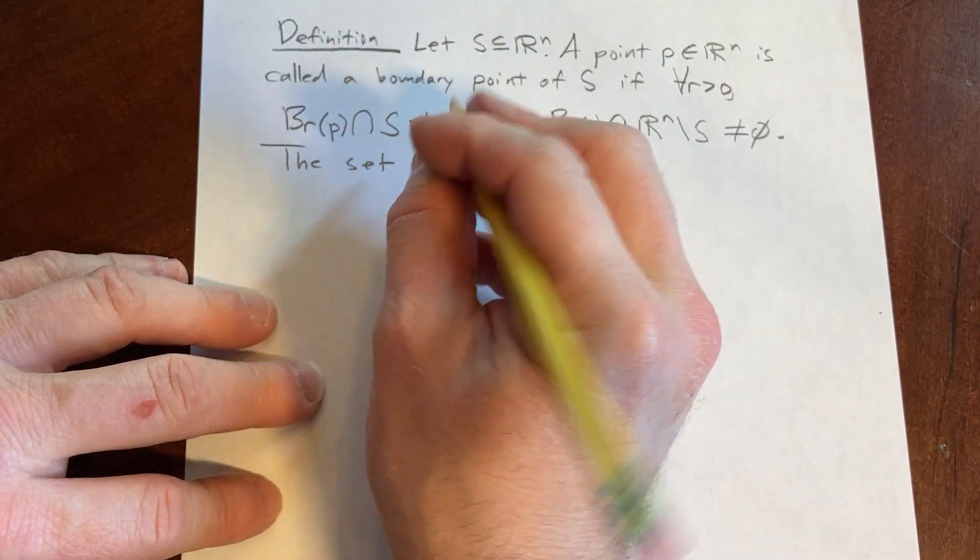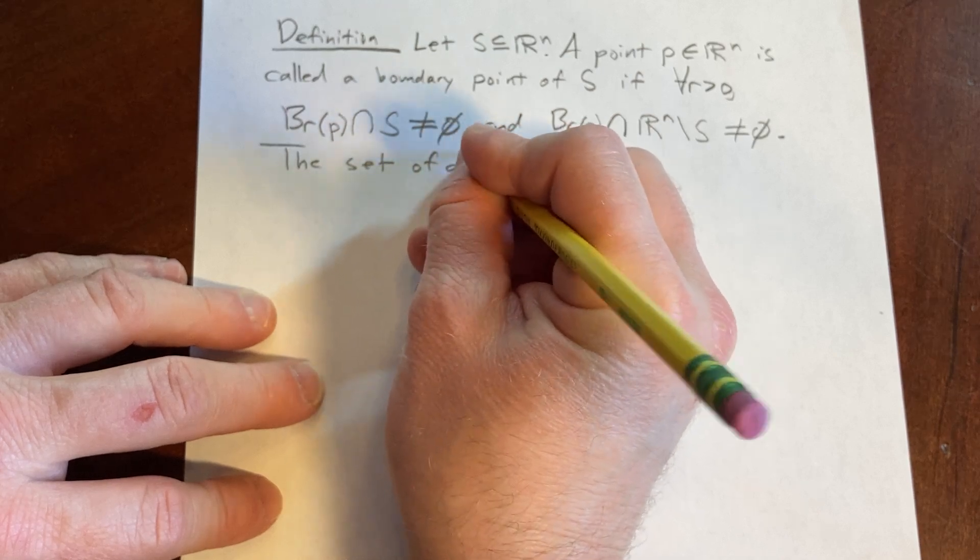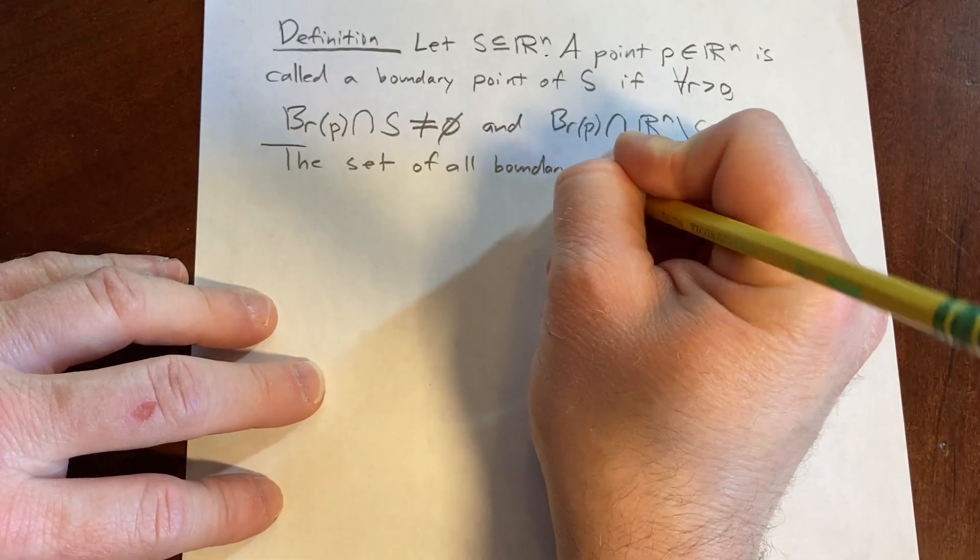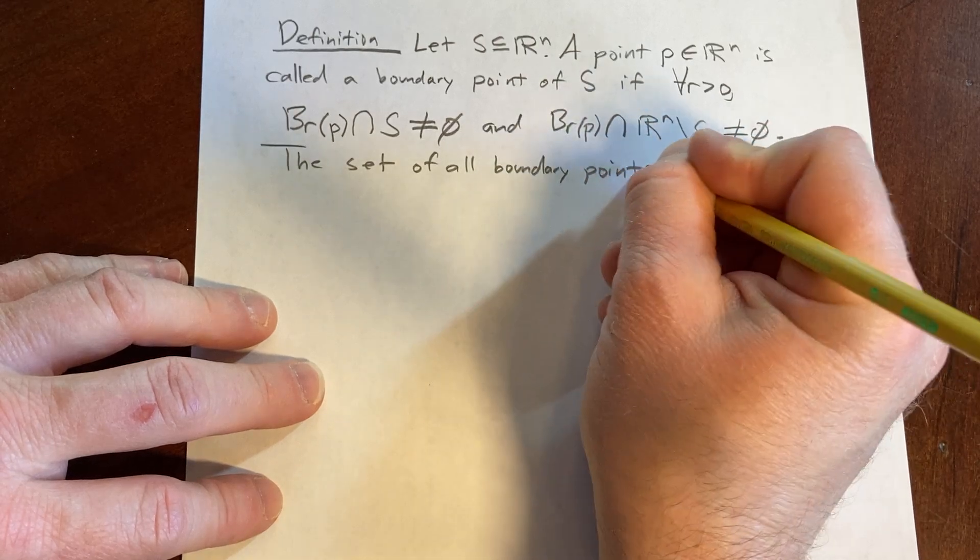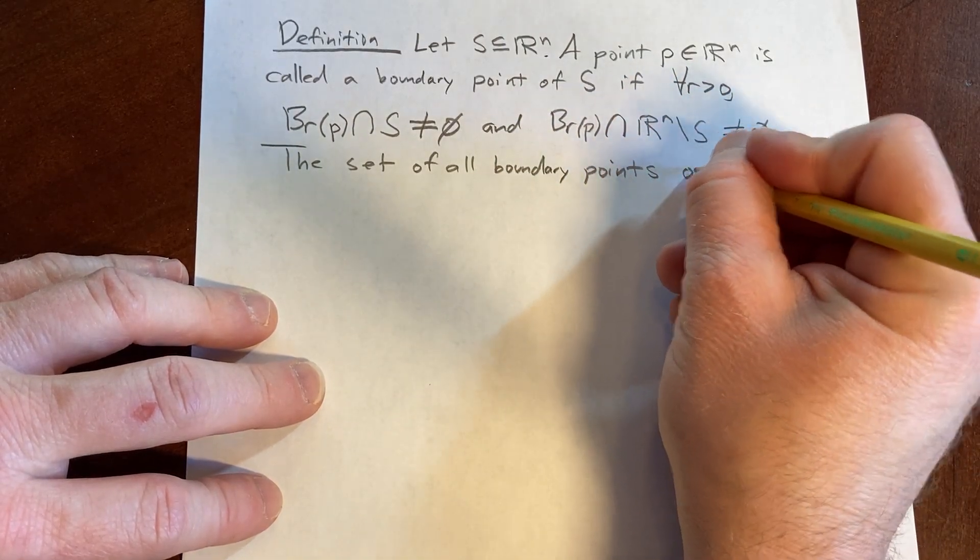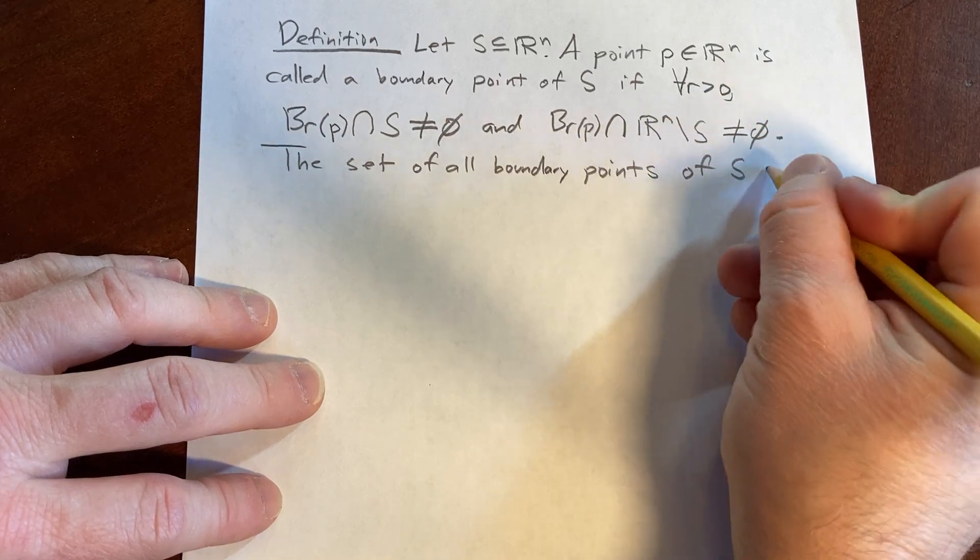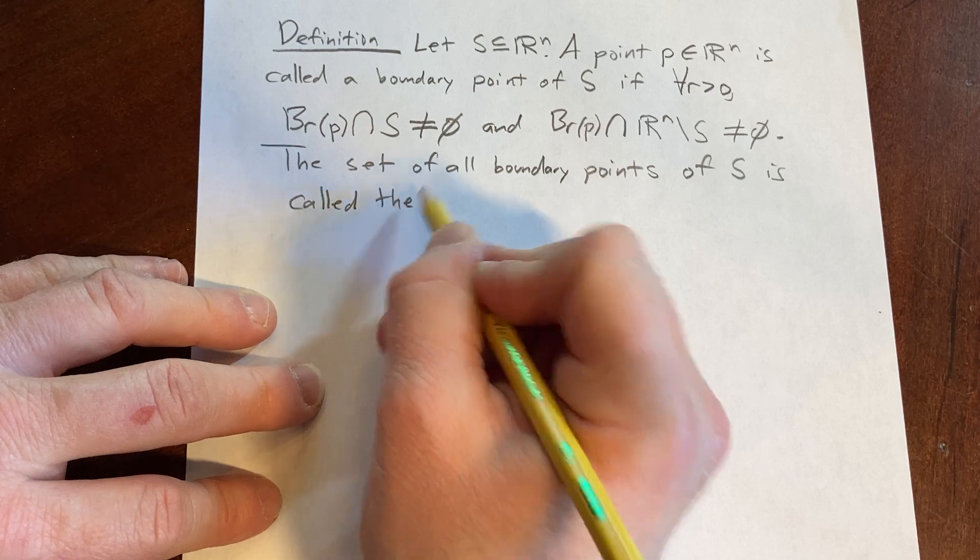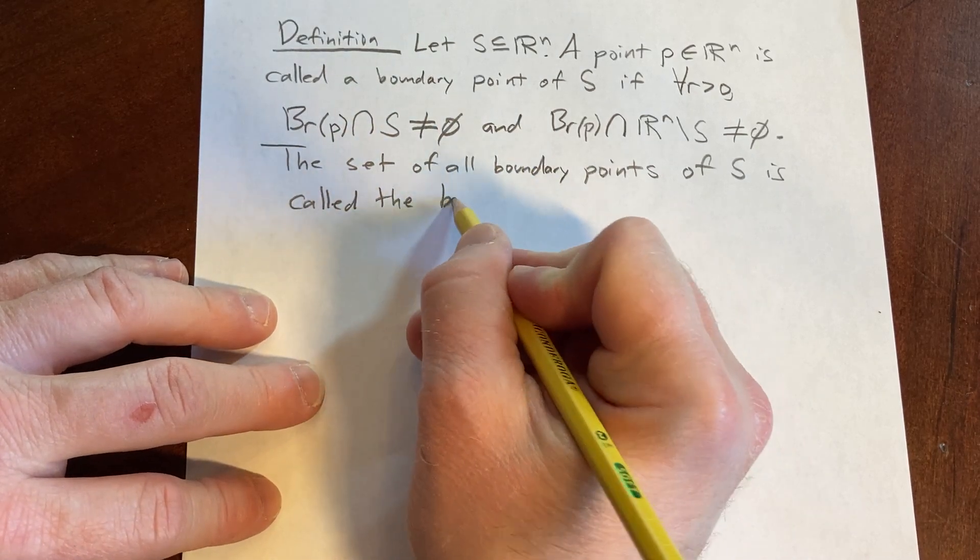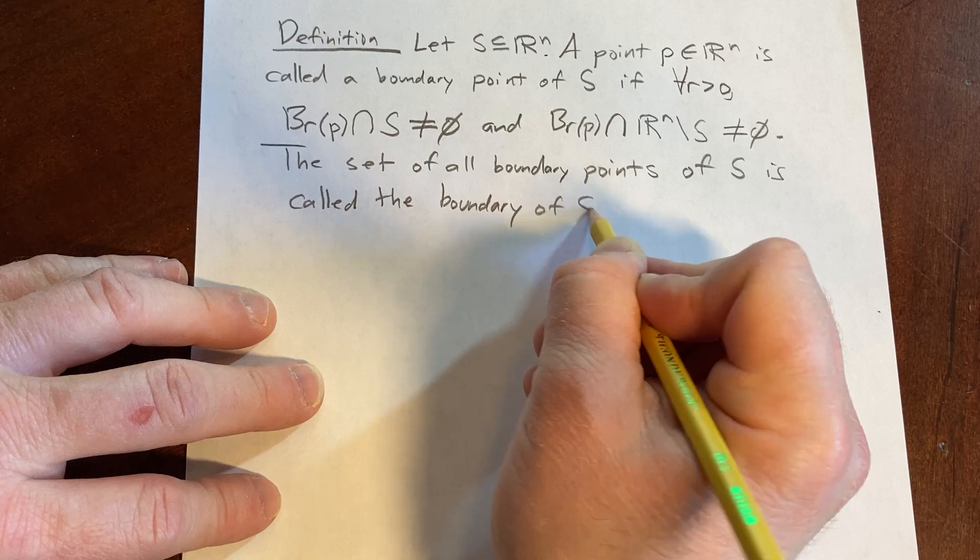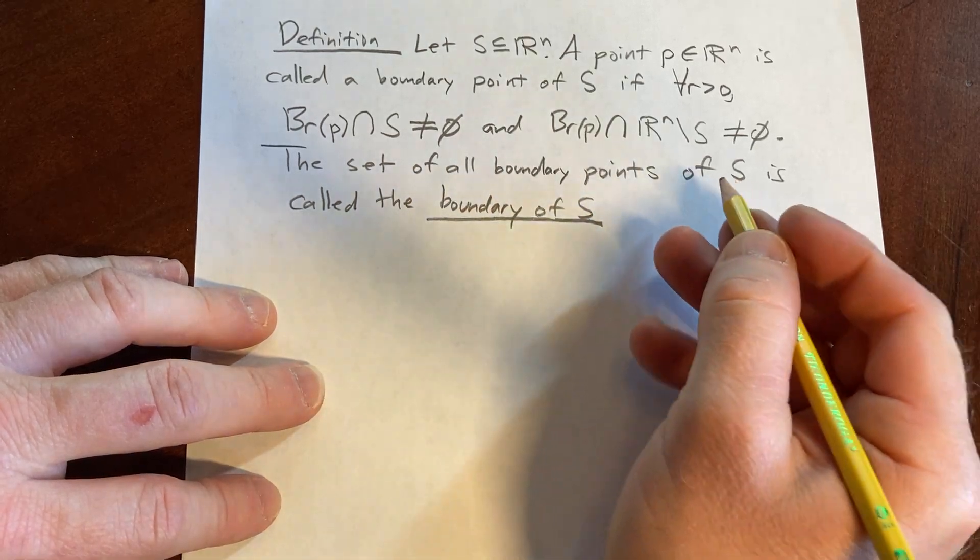So if you took all of them and put them in a set, the set of all boundary points of S is called the boundary of S, which makes sense.